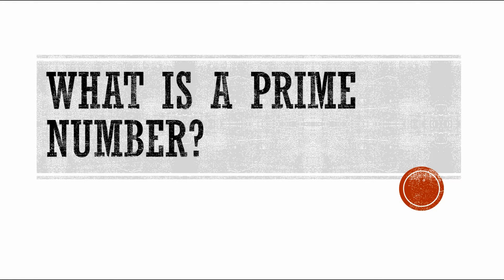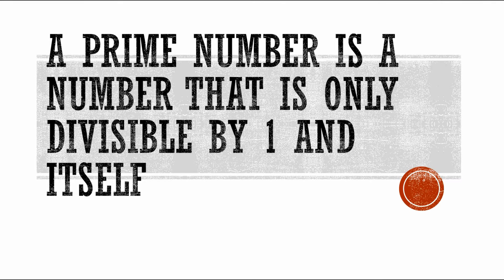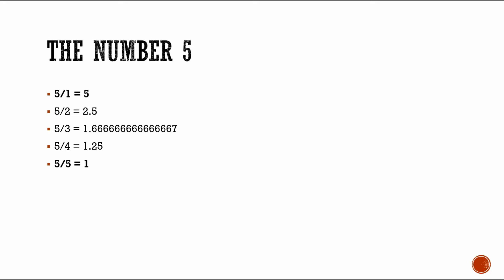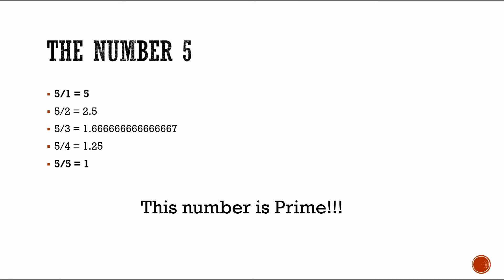You may be asking yourself, what is a prime number? A prime number is a number that is only divisible by one and itself. Let me give you an example. Let's say we have the number five. Five is only divisible by one and itself — five divided by one equals five, and five divided by five equals one. No other divisors will give you a quotient with no remainder, so five is a prime number.